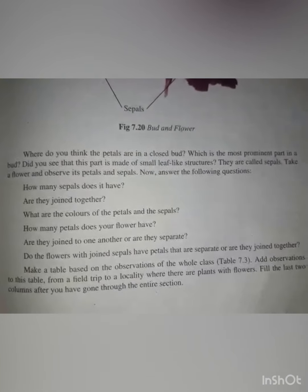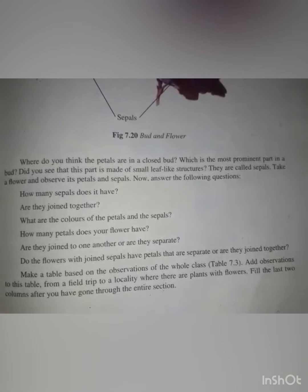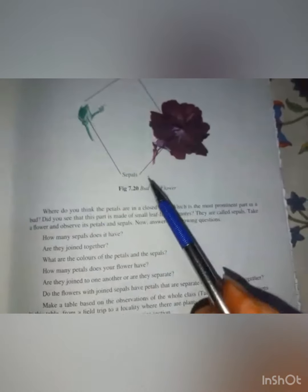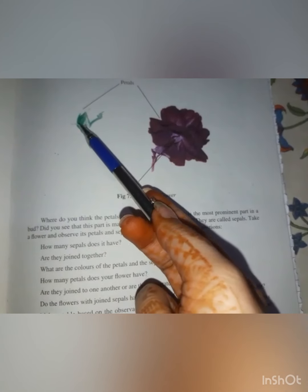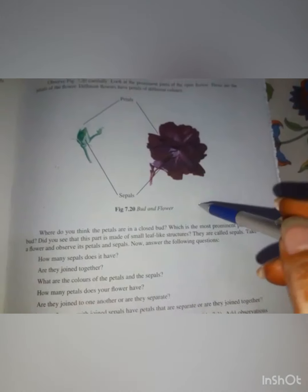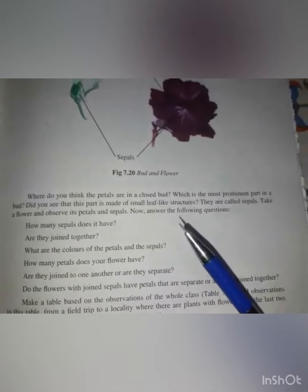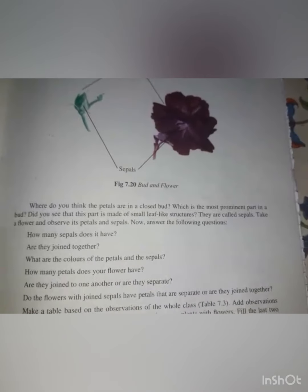Next: where do you think the petals are in a closed bud? Which is the most prominent part in a bud? Did you see that this part is made of small leaf-like structures? The most prominent part in the bud is the sepals, because the petals are covered. The sepals are the green color part. The leaf-like structures are called sepals.